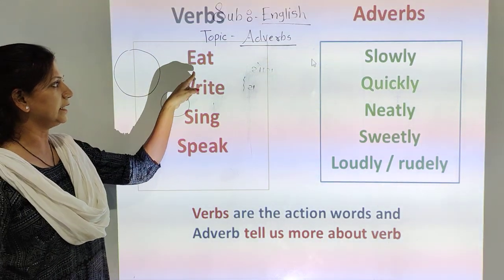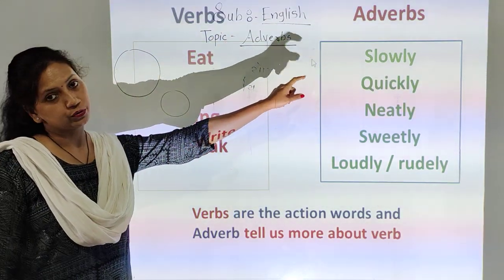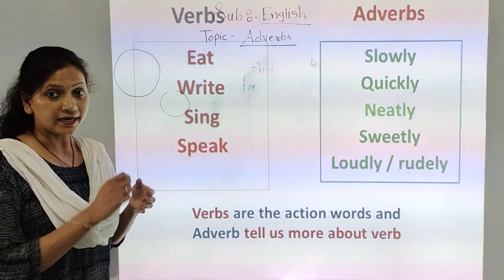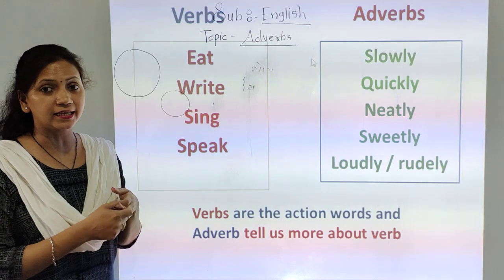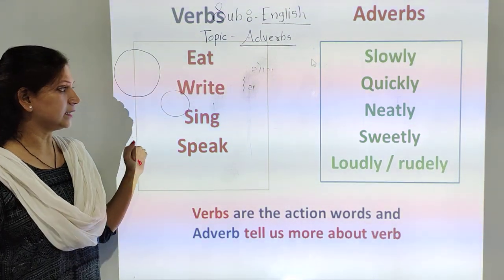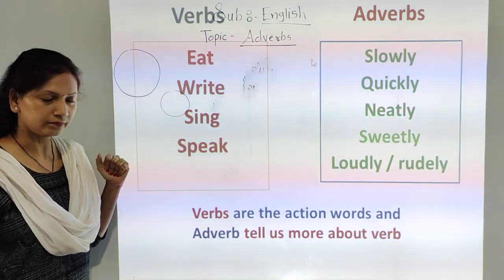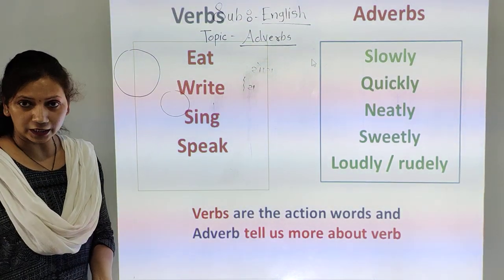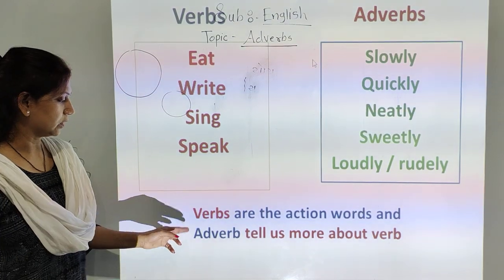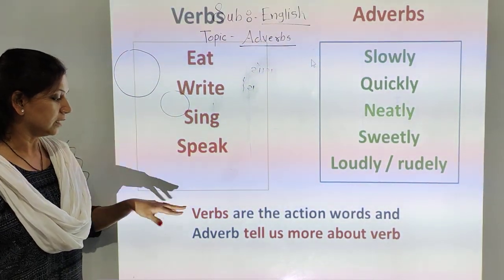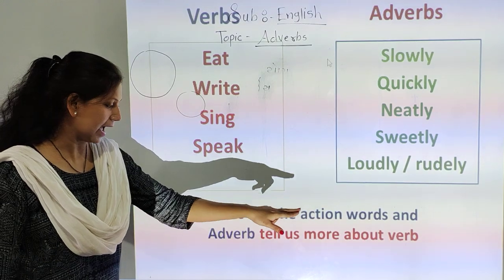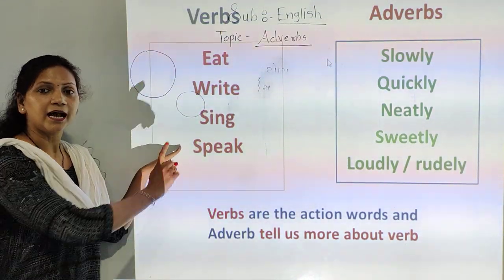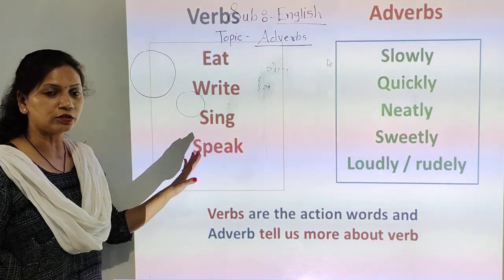Adverbs describe verbs. For example: eat — how do we eat? Eat slowly. Write — write quickly, or we can say write neatly. Sing sweetly. Speak loudly, or you can speak rudely. So verbs are the action words and adverbs tell more about the action words — more about the verb.